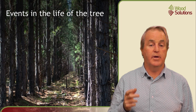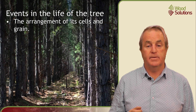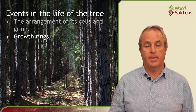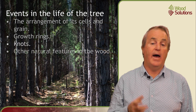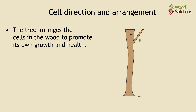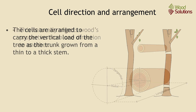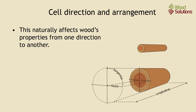These impacts include the directional arrangement of the wood cells and the grain of the wood, growth rings, knots and other natural features in the material. The tree arranges the cells in the wood to promote its own growth and health. These cells are naturally arranged to carry the vertical loads of the tree as the trunk grows from a thin to a thick stem. This naturally affects wood properties from one direction to another.